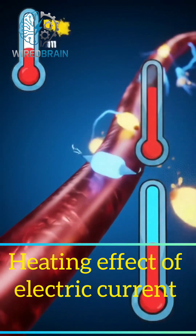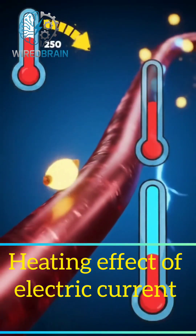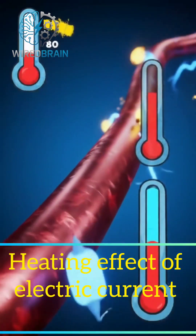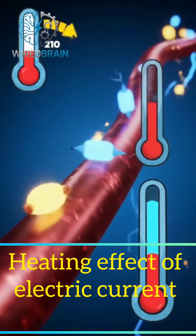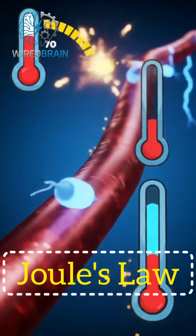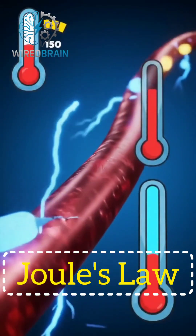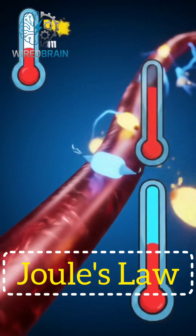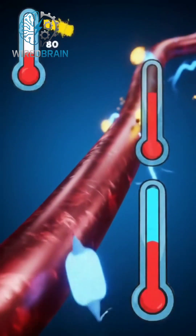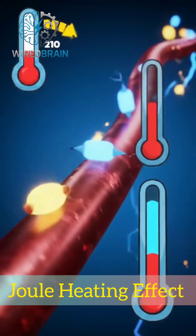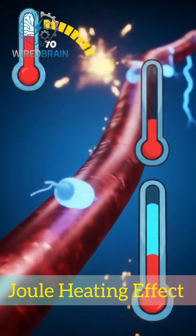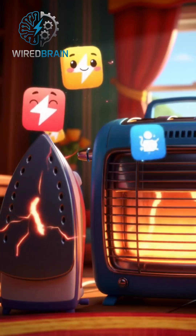Today we're going to talk about something super cool, or actually super hot. It's the heating effect of electric current, explained by Joule's law. When electric current flows through a wire or resistor, it produces heat. This is called the Joule heating effect, or simply the heating effect of current.